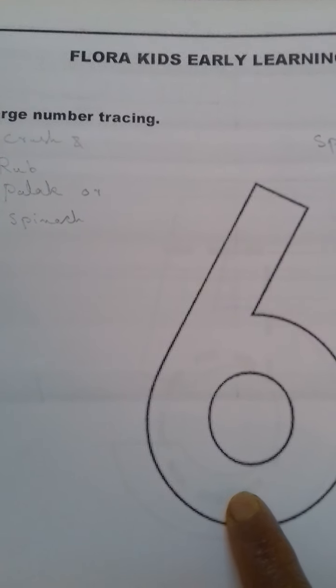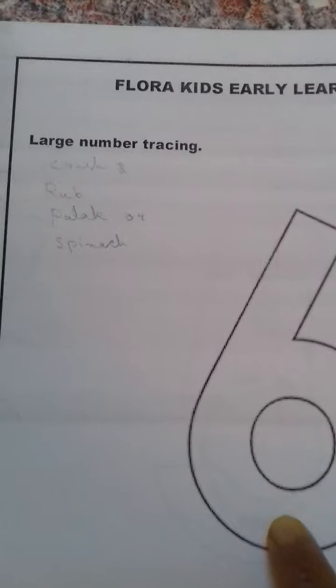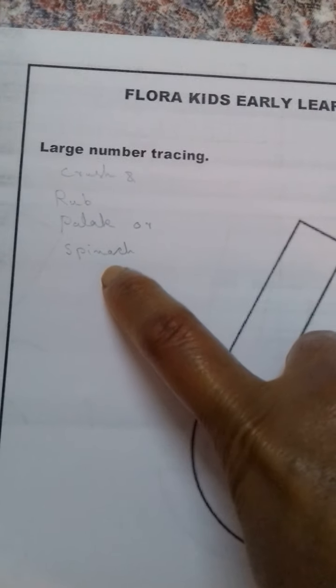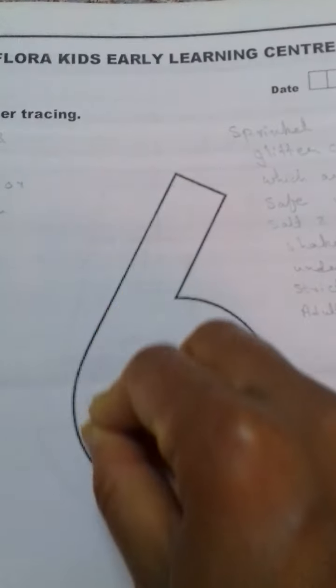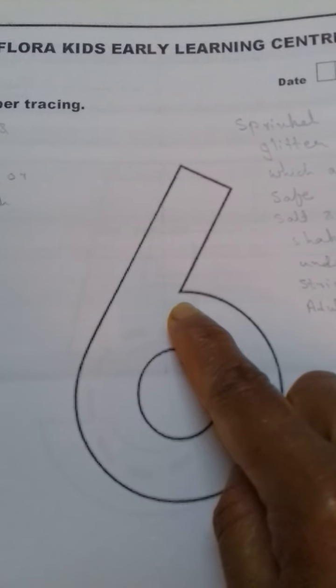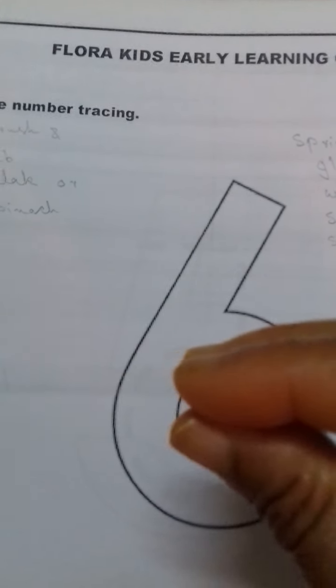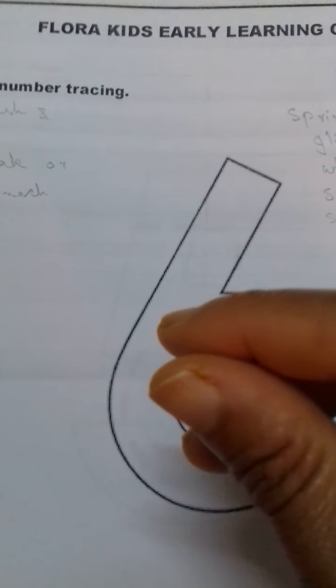So that they can learn to identify numbers from 6 to 10. The first activity is crush and rub fresh pollock or spinach. Give the child pollock or spinach leaves so that the child rubs it on the number and you get a natural green color. While doing this activity the child holds the lace in these three fingers so that it strengthens these fingers.